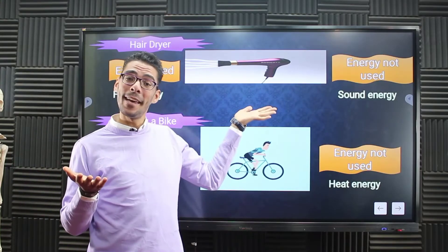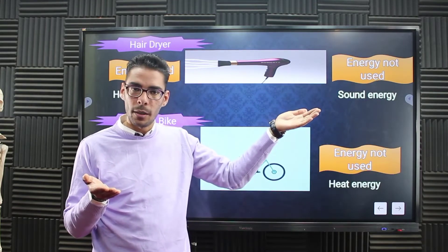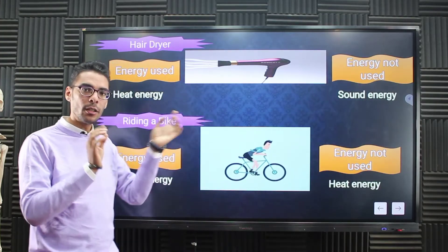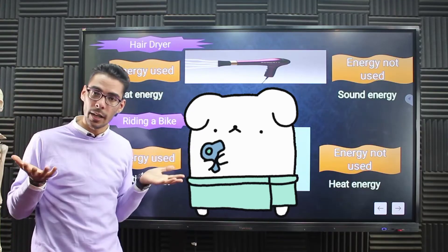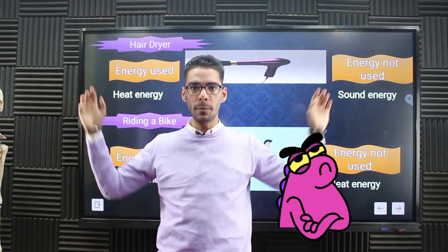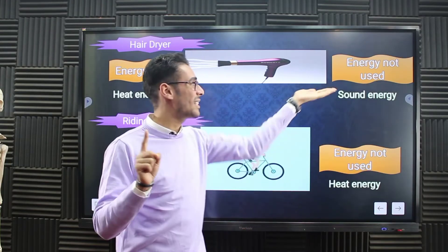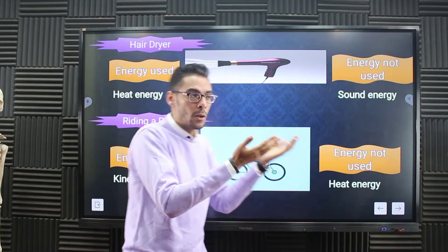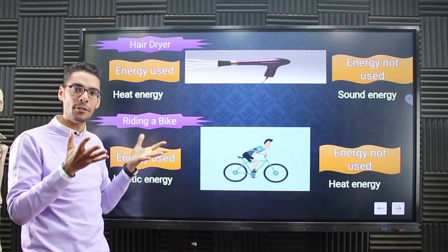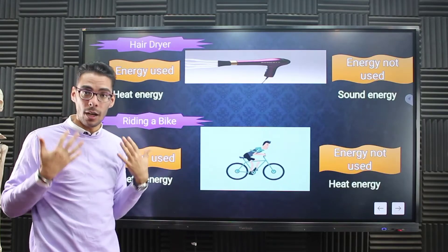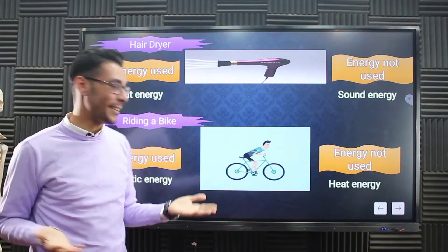Let's take another example: the hair dryer. It is an electric device, so the input energy is electric energy. The produced output is heat and sound. But the main function of the hair dryer is related to heat energy — we use the heat to change our hairstyle. We do not use the sound. Both heat and sound are produced, but the sound is not used energy. The useful energy — the used energy we need — is the heat energy.